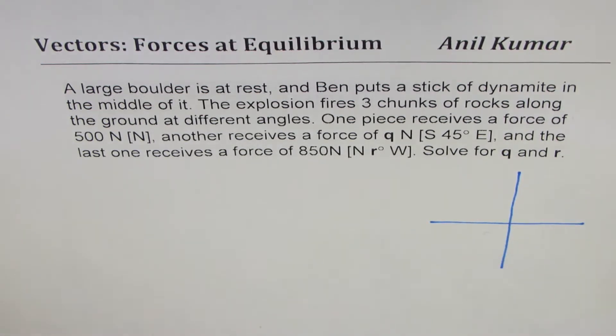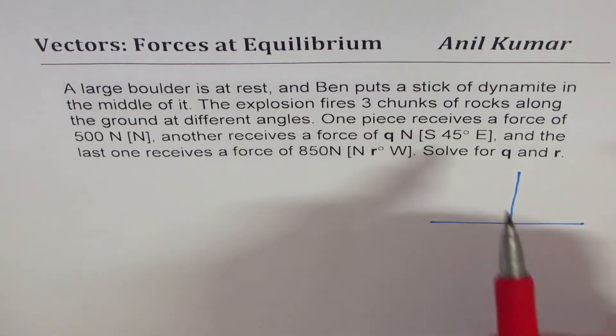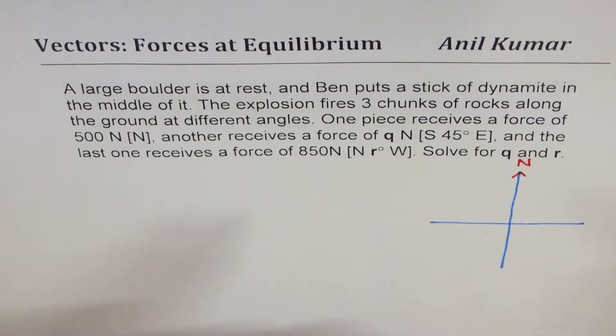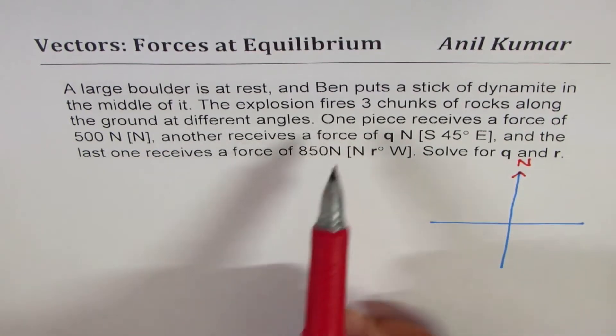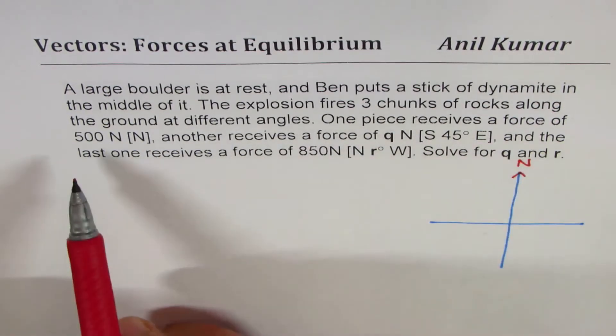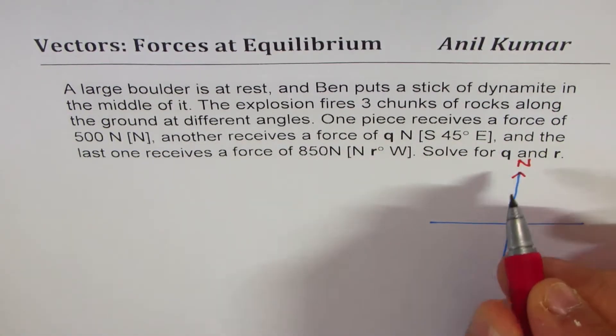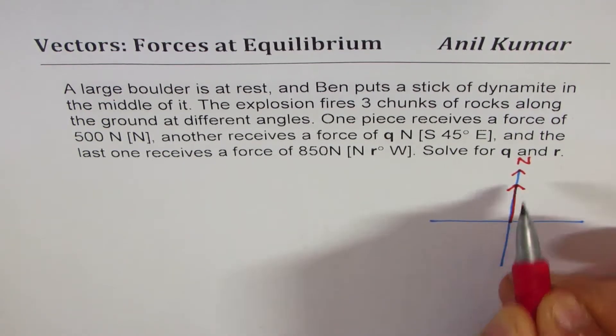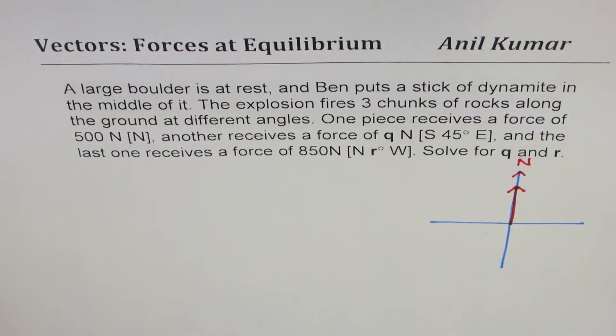We will represent north along the y-axis positive, let this be the north for us. The explosion, one piece receives a force of 500 newtons north, so let this be 500 newtons north. We will call this 500 newtons north.